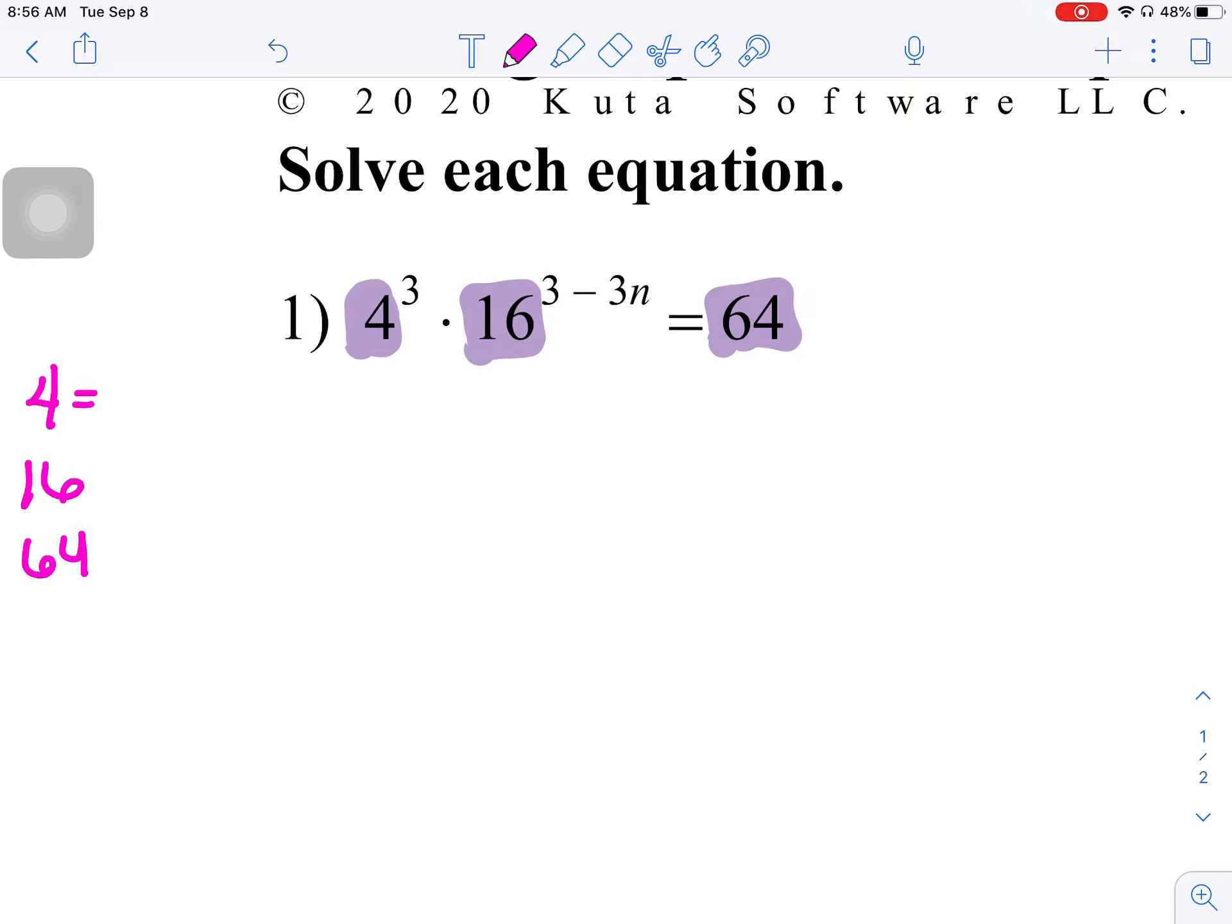So, let's see if we can write all of these with a base 4. So, 4 would be 4 to the first, that's easy enough. 16, 4 squared, okay, not too bad. And 64, well clearly that's not 4 squared, so let's go up a level and see, and I do have my calculator right next to me, so this would be 4 to the third.